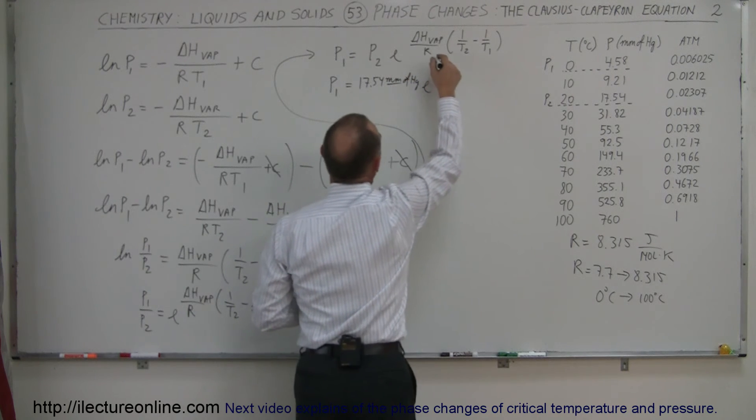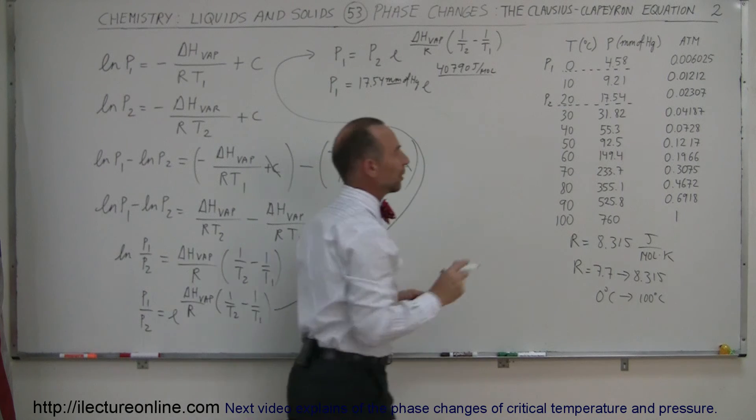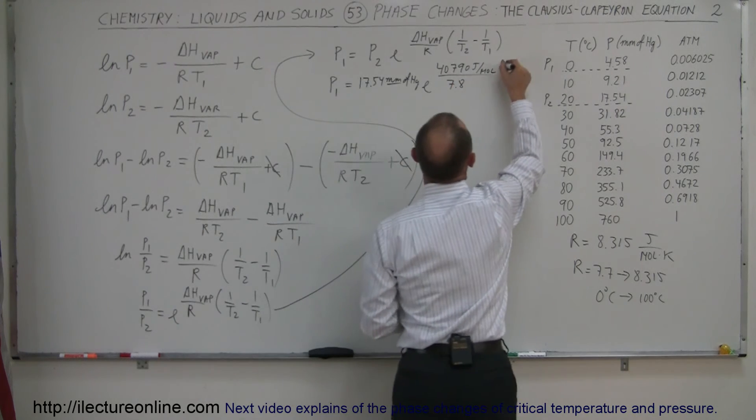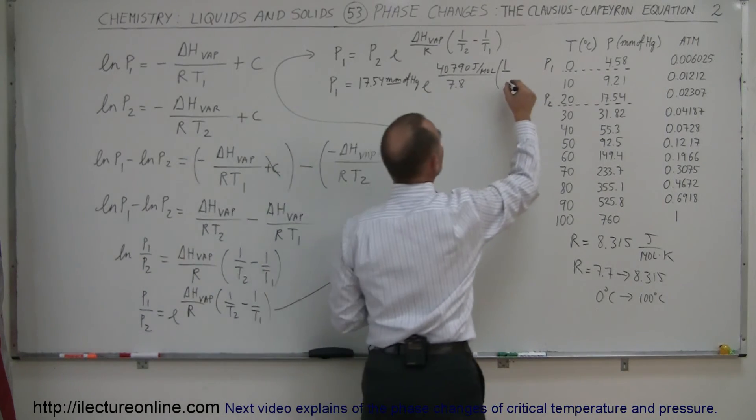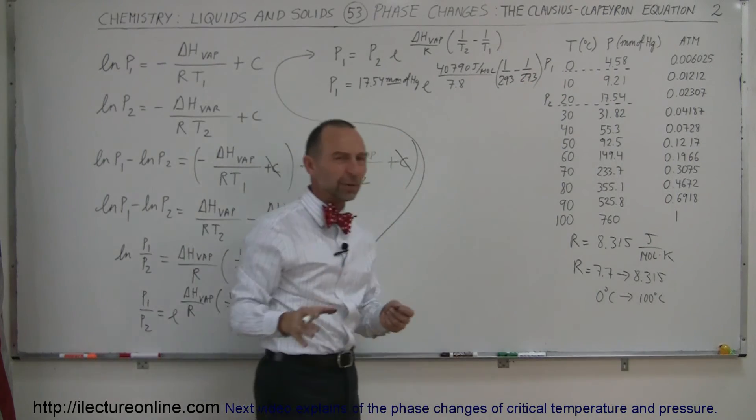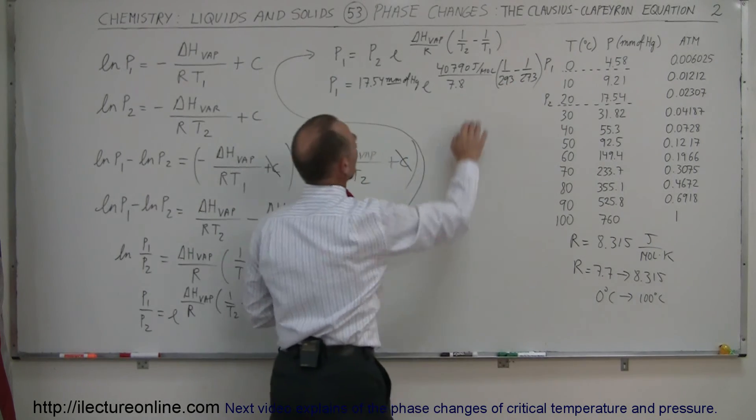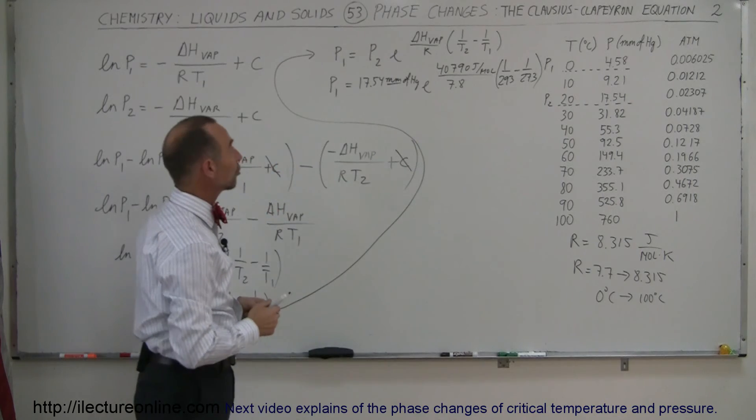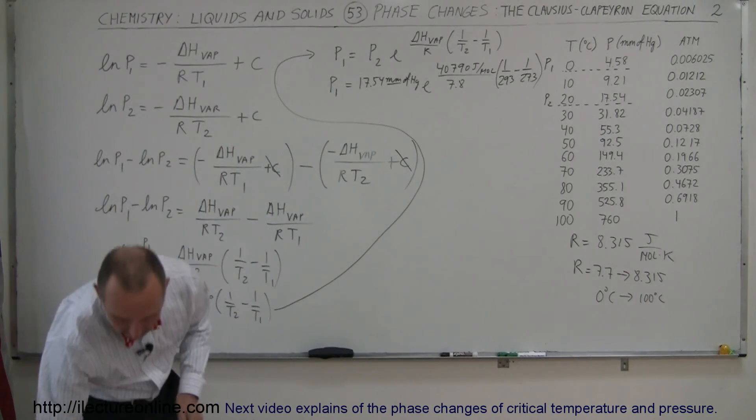Times E to the delta H of vaporization is 40,790 joules per mole, divided by R. We don't want to use 8.315, we use something smaller, so let's say 7.8 times 1 over temperature 2. Temperature 2 is 20 degrees centigrade, which is 293 Kelvin, minus 1 over 273, because 0 degrees centigrade is 273 Kelvin.